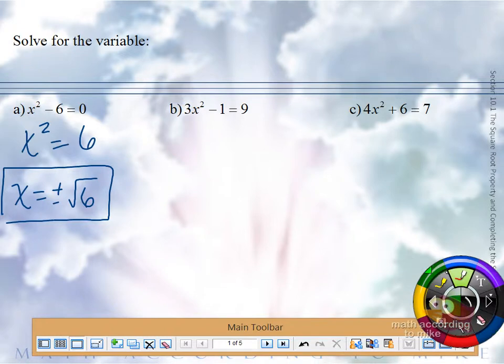How do we isolate the square term? Add 1 and then what? Divide by 3.